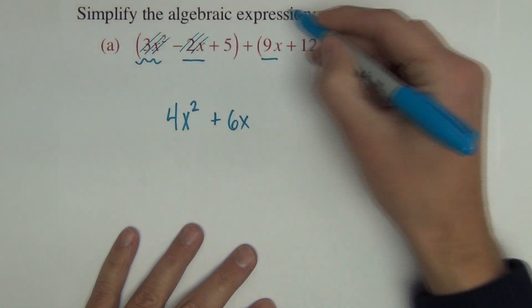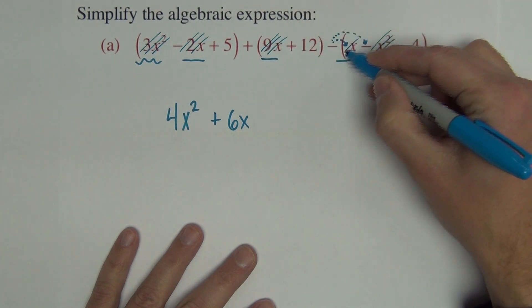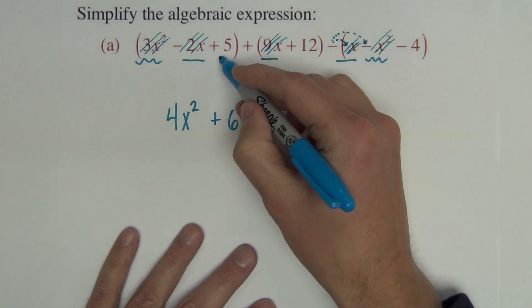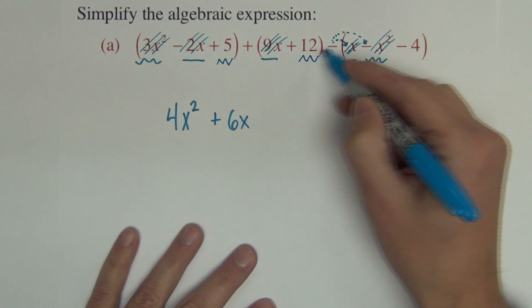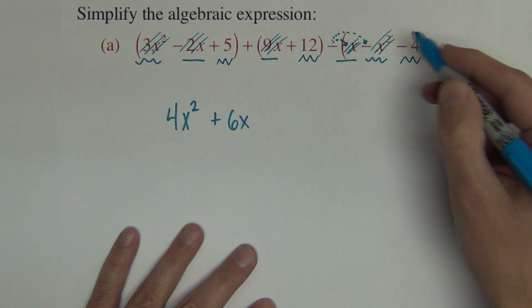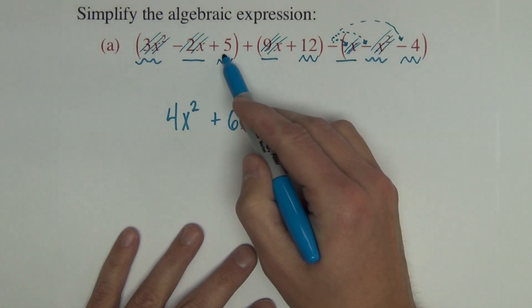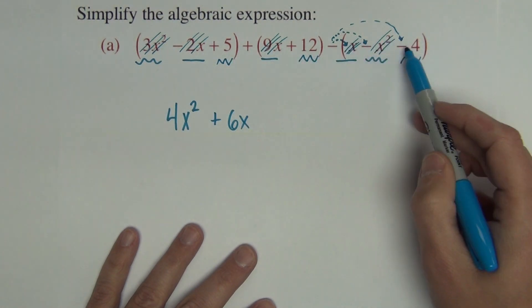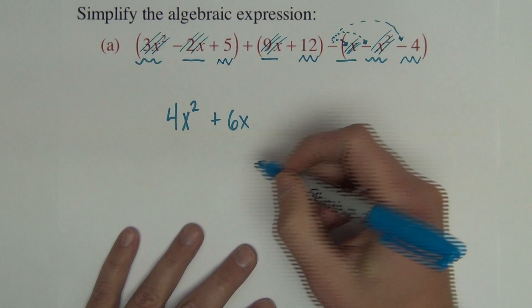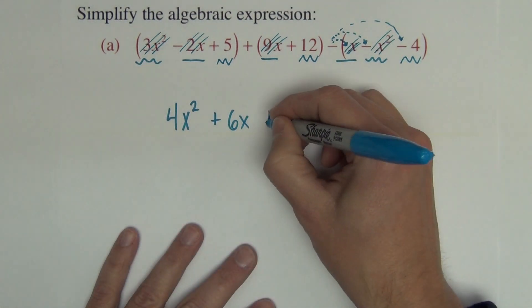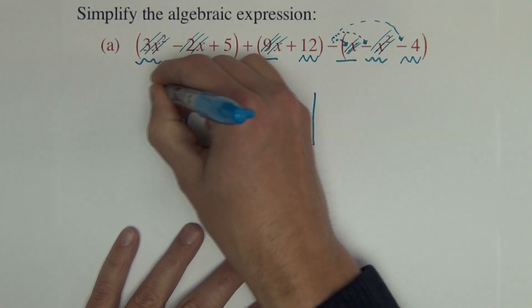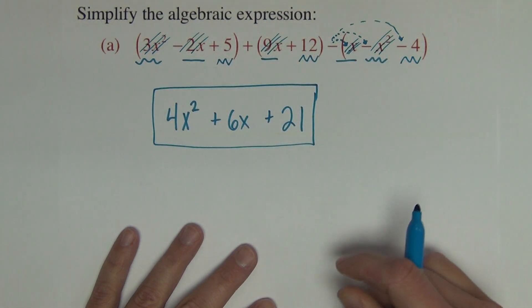That negative applies here. So we have negative 2 plus 9, which is 7, minus 1, which is 6. Let's get rid of those. And now we've got 5, 12, and 4. That negative applies to right here, that negative. So it's positive 5, positive 12, positive 4, which is 21. And finished.